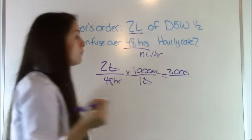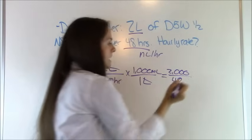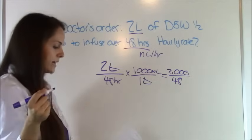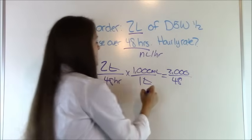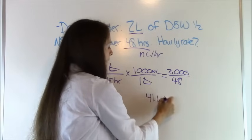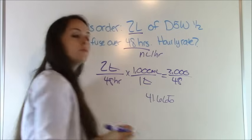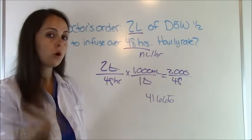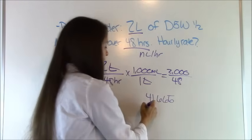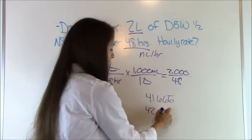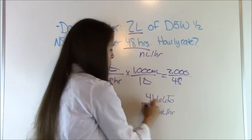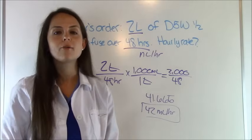48 times 1 is 48 and 2,000 divided by 48 is 41.66 repeating. And you need to round to the nearest whole number for this. So it would be 42 milliliters per hour. That's how fast we are going to run this solution so it'll go in over 48 hours.